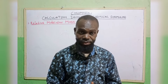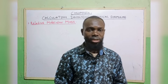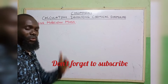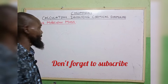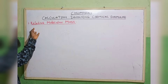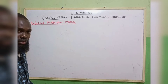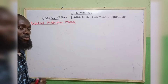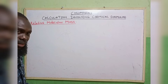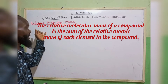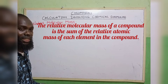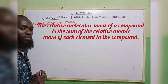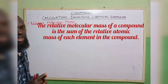Welcome back to our chemistry class. Today's topic is going to be on calculations involving chemical formulae. The first aspect I'm going to look at is how to calculate the relative molecular mass of a compound. To calculate it, we need knowledge of the relative atomic mass of the elements. The relative molecular mass of any compound can be calculated by adding the atomic masses of each element that makes up the molecule.